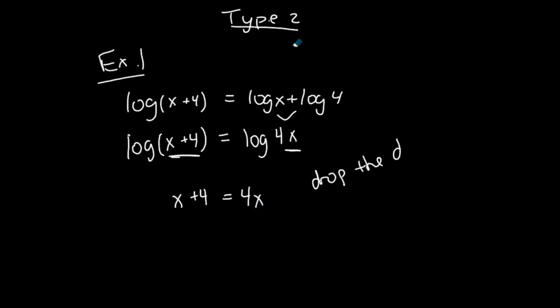Now, I can't do this for a Type 1 logarithmic equation because I have a constant on the right, but Type 2s, I have a single log on the left and a single log on the right. If the bases match, I can drop the logs and then set the expressions equal to each other, and then I just solve. Subtract x from both sides, I get x is 4 thirds.